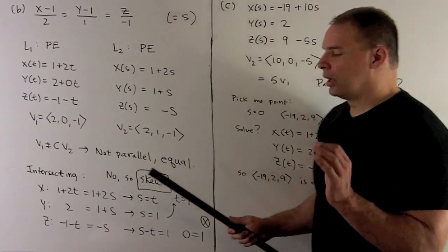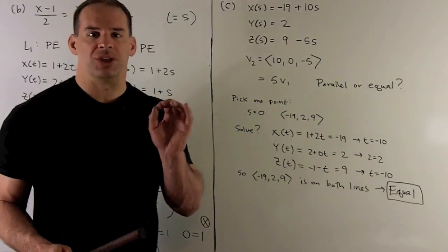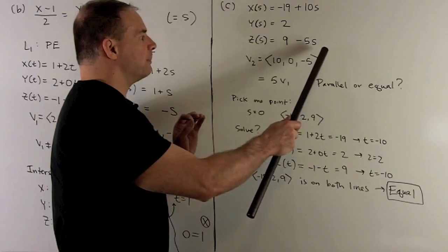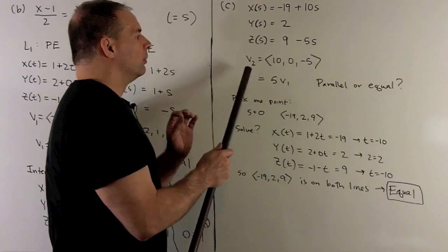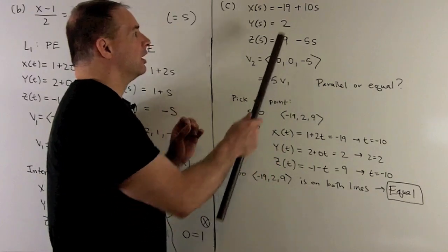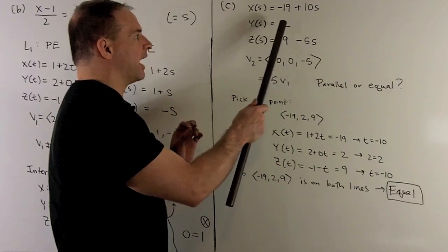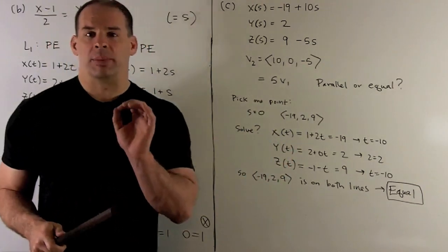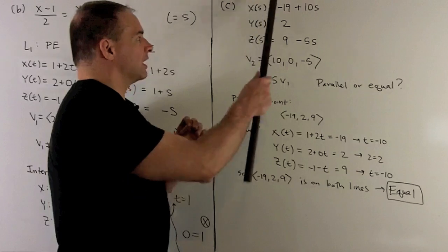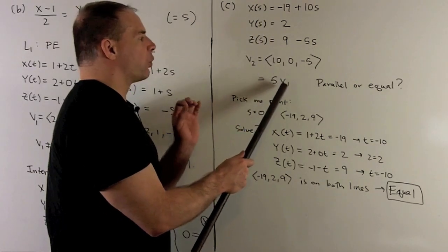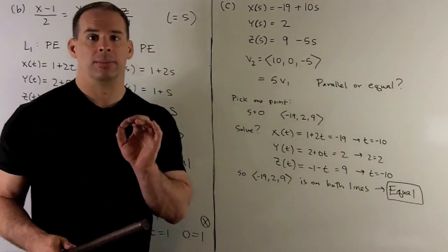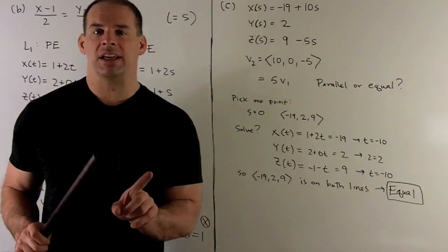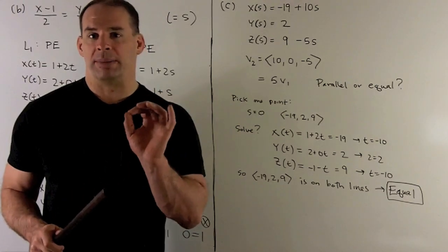For the third case, the equations are already given in parametric form. The direction vector of this new line is (10, 0, -5), which equals 5 times v1 = (2, 0, -1). So the lines are parallel. The question now is whether they are parallel but distinct, or actually the same line described differently.